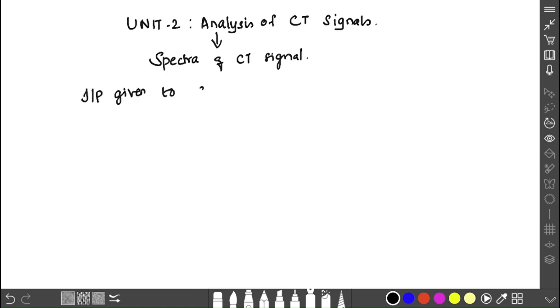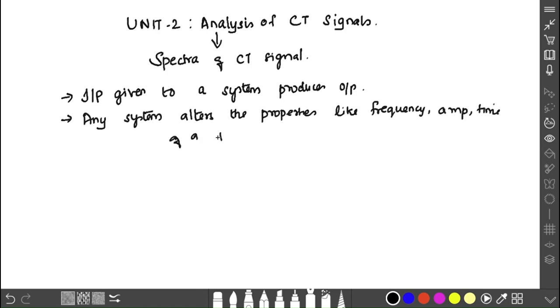What is analysis? It means spectra of a continuous time signal. For a system, input will be given and output will be produced based on the type of system. Any system which alters the properties of a signal—that is, frequency, amplitude, and time scale—is known as a system.